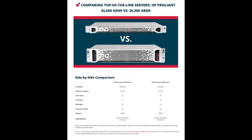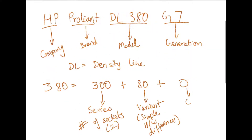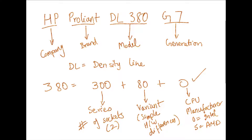The last digit indicates the processor type. If the last digit is 0, it means that the server uses Intel processors. If the last digit is 5, then the server uses AMD processors. So even if other parts of the model name seem complicated, you can simply look at the last digit to determine whether the server has an Intel or an AMD CPU.